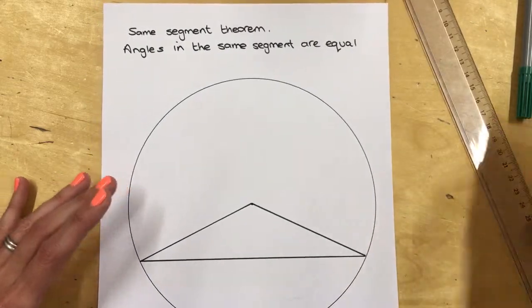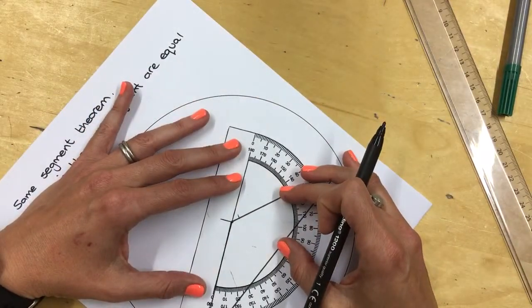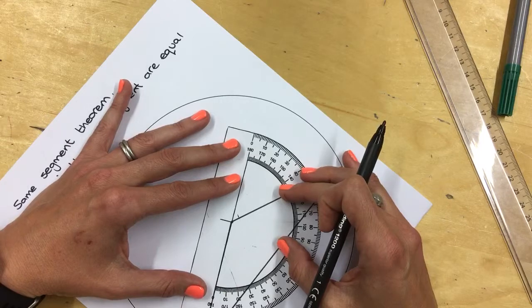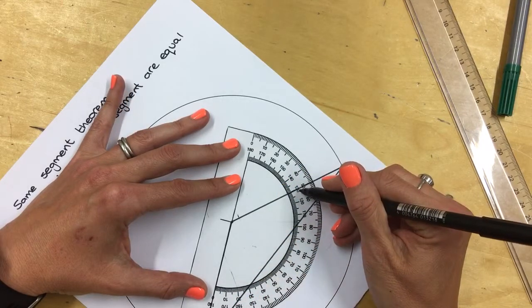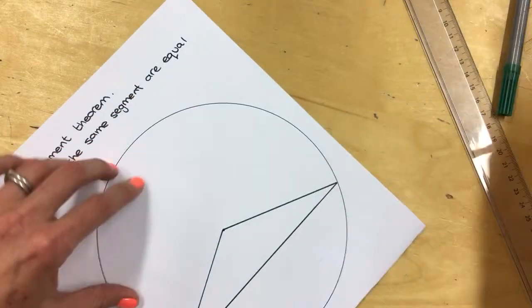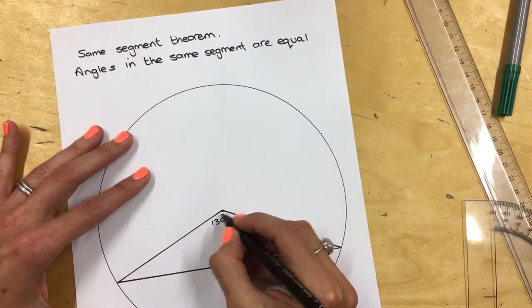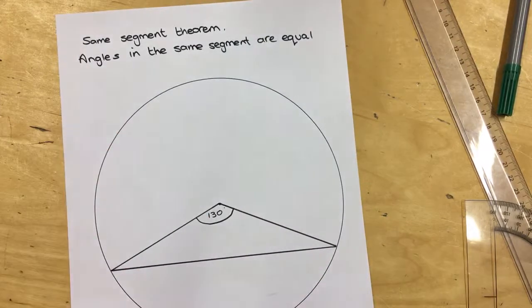Now what we're going to do is I'm going to start by measuring this angle here. So this angle is 130 degrees. So I'm going to write that on my diagram.